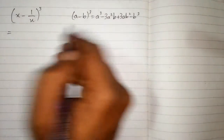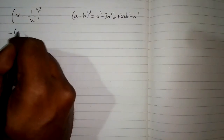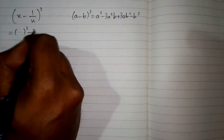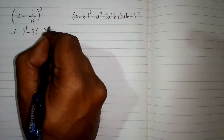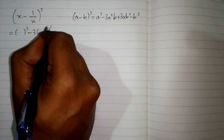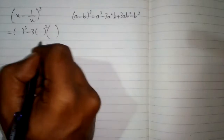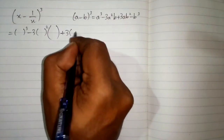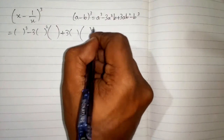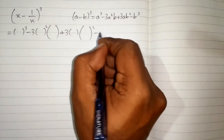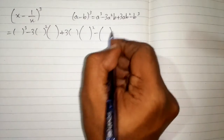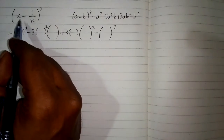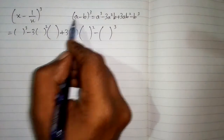So the structure is: a cube minus 3a squared b plus 3ab squared minus b cube. We can see that we have x in place of a and 1 upon x in place of b.